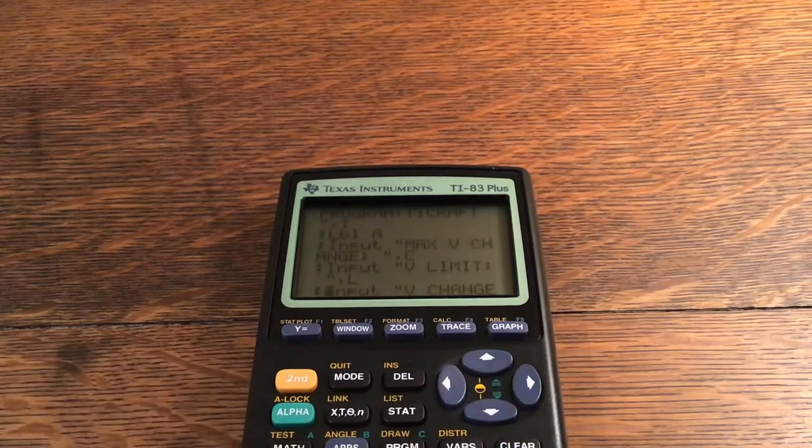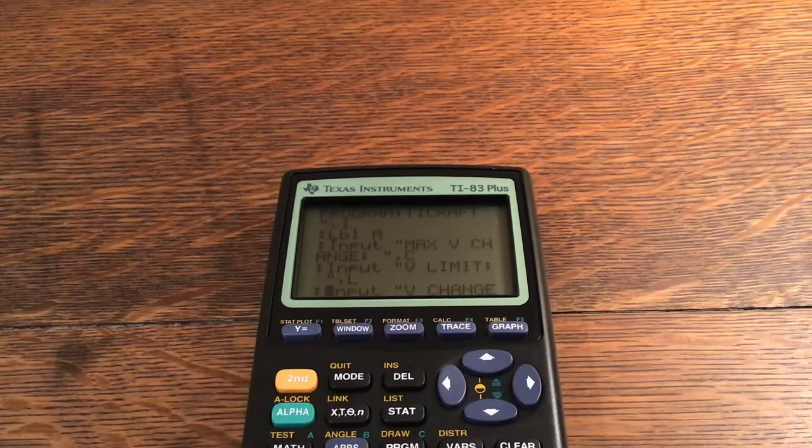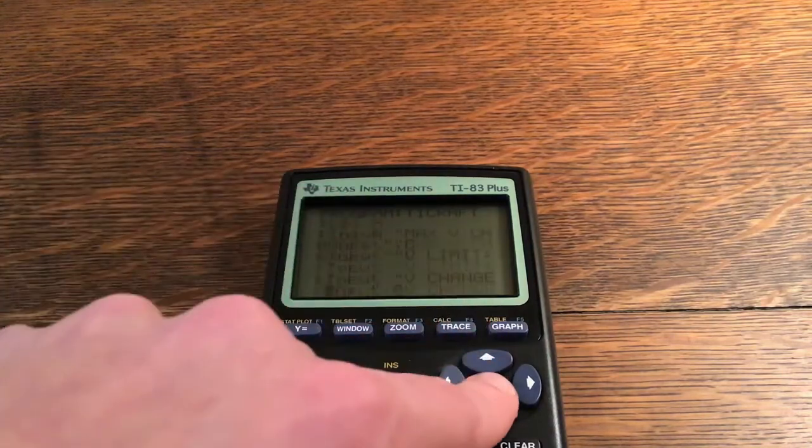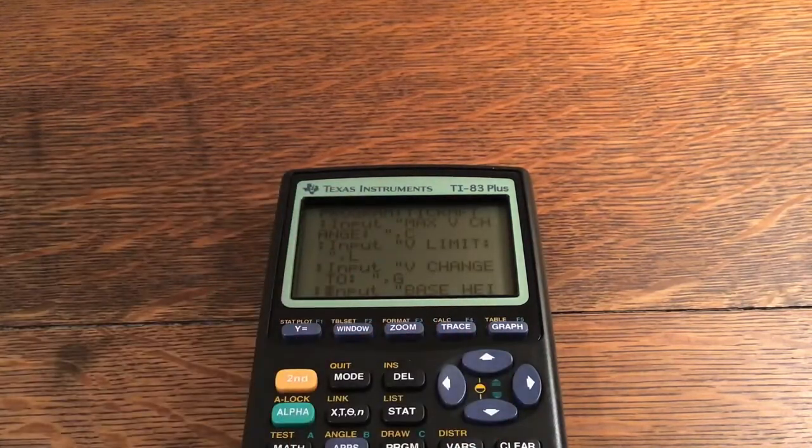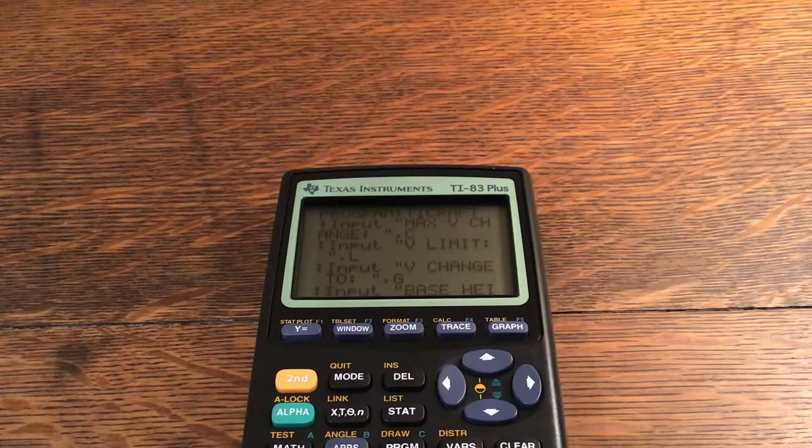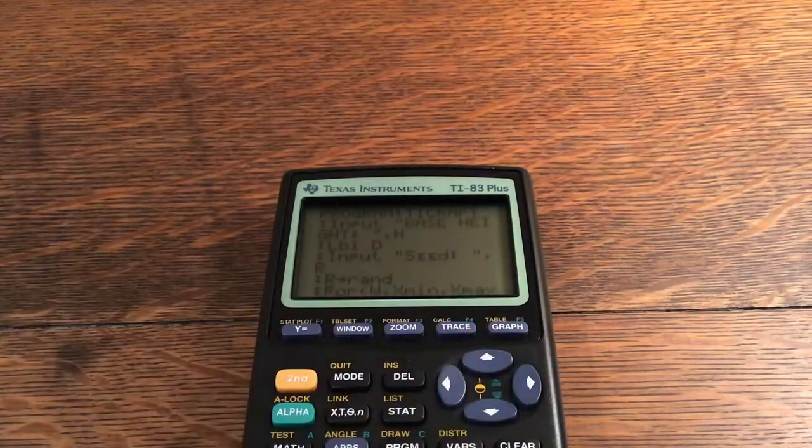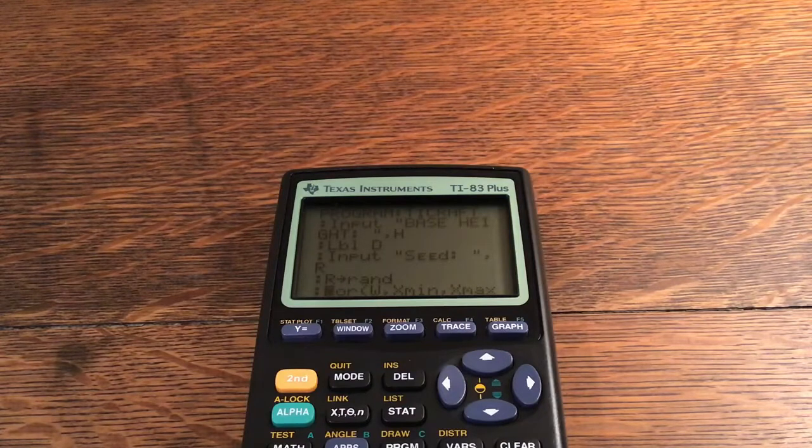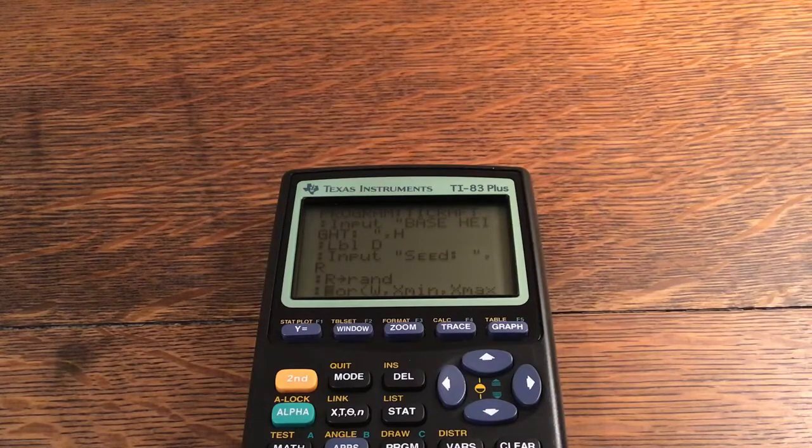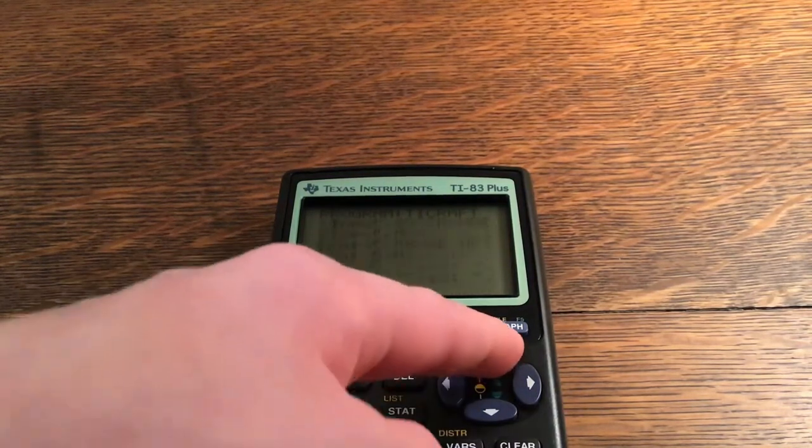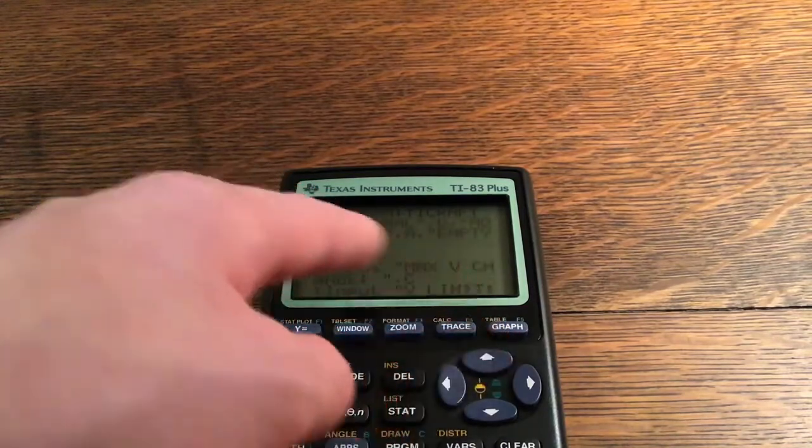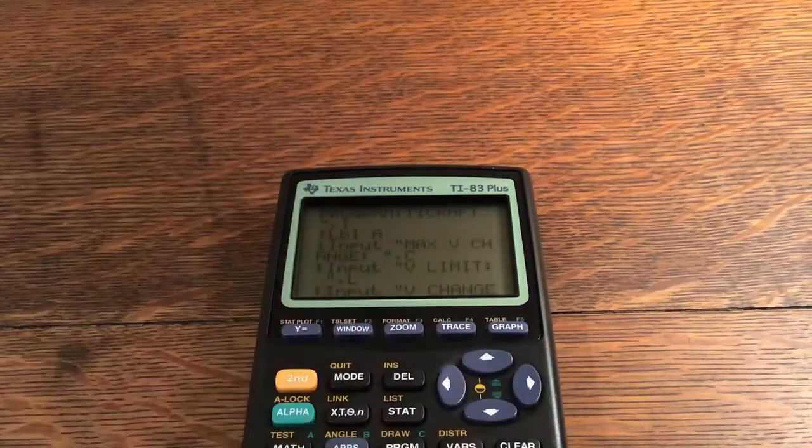Label A: Input max V change comma C. Input V limit, input the height change, input the base height, input the seed. Then R store into rand, so it actually is taking that seed into consideration, putting that into the rand. When it generates a random number it will take the seed into consideration.